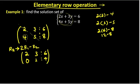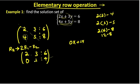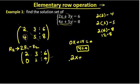We are talking about x and y. Here we are talking about x. 0 times x plus 1 times y equals 4. 0 times x plus 1 times y equals 4.